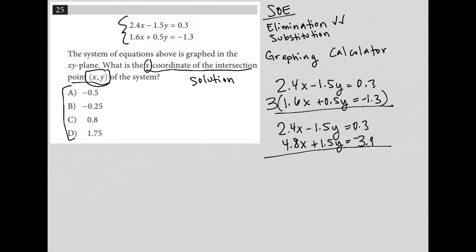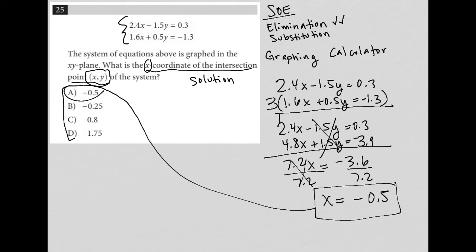By adding these together, you can see that my negative 1.5Y and positive 1.5Y are gone. Adding the 2.4 plus 4.8 gives me 7.2X equals then 0.3 minus 3.9 is negative 3.6. I can then divide by 7.2 and we'd get X is equal to negative 0.5. You throw that into your calculator. So our answer here must be choice A.